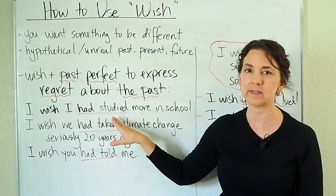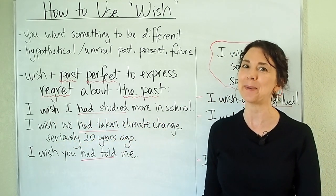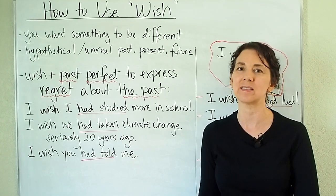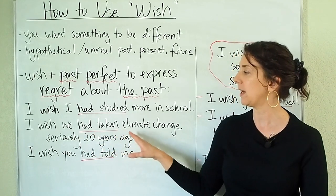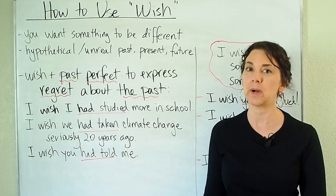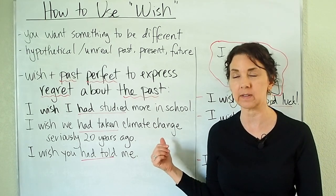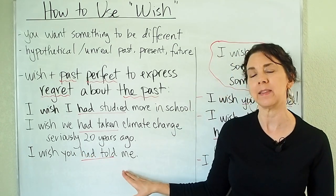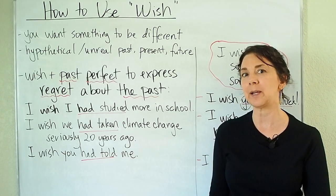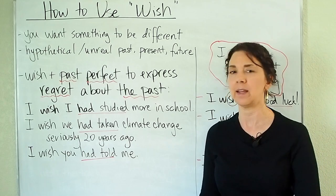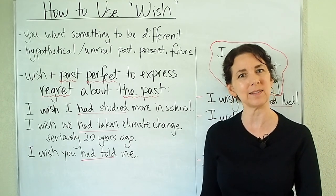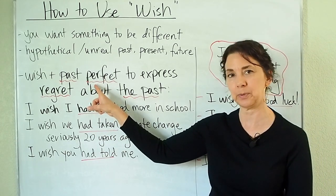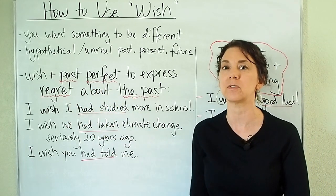For example: I wish I had studied more in school. So I'm thinking about my past — maybe I didn't study very much — and I could say I wish I had studied more in school. Or: I wish we had taken climate change seriously 20 years ago. So we didn't take climate change seriously, but I wish that were different. Or: I wish you had told me — this is a very common sentence. For example, if I say yesterday was my birthday, then you can say: oh, I wish you had told me, I didn't know when I saw you yesterday. So to talk about something you wish were different in the past, you're going to use past perfect in the second clause, and this is often used to express regret.